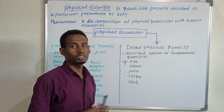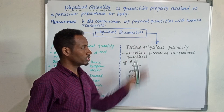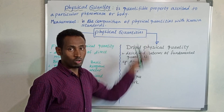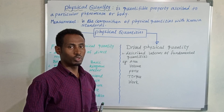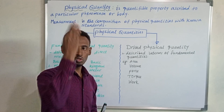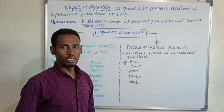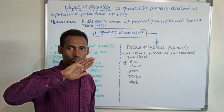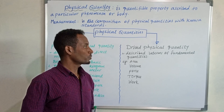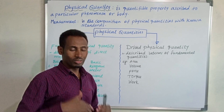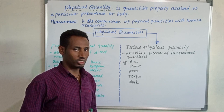For example, if we want to measure the height of this whiteboard using traditional measurement, we can use our key height, our span, our feet, or our palm. It can be used as a measuring unit. This kind of measurement is known as traditional measurement.